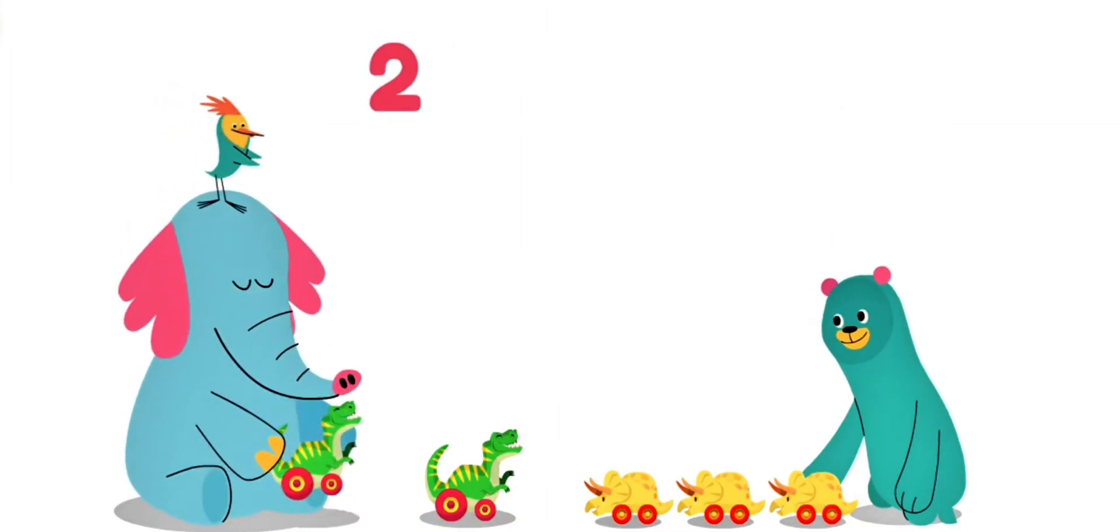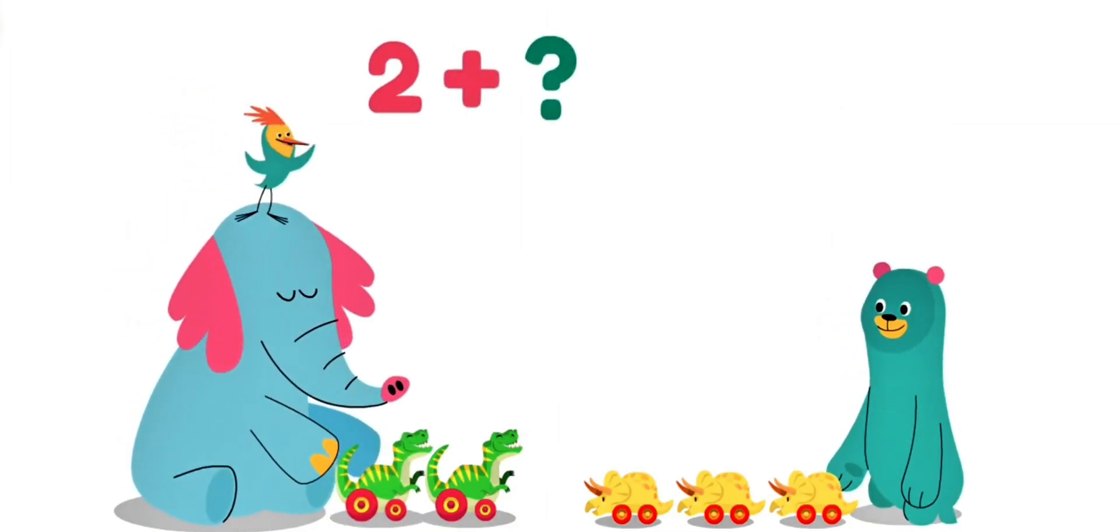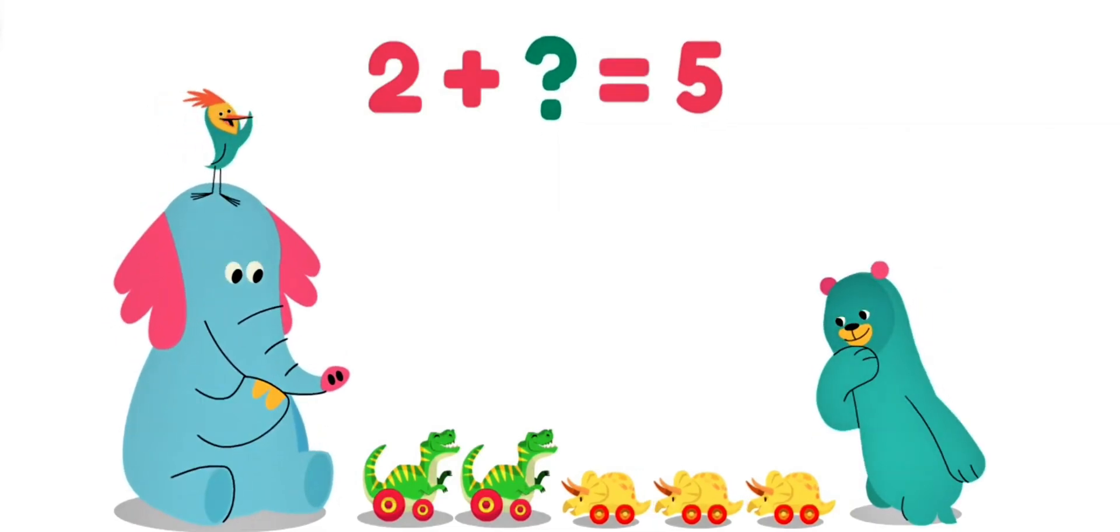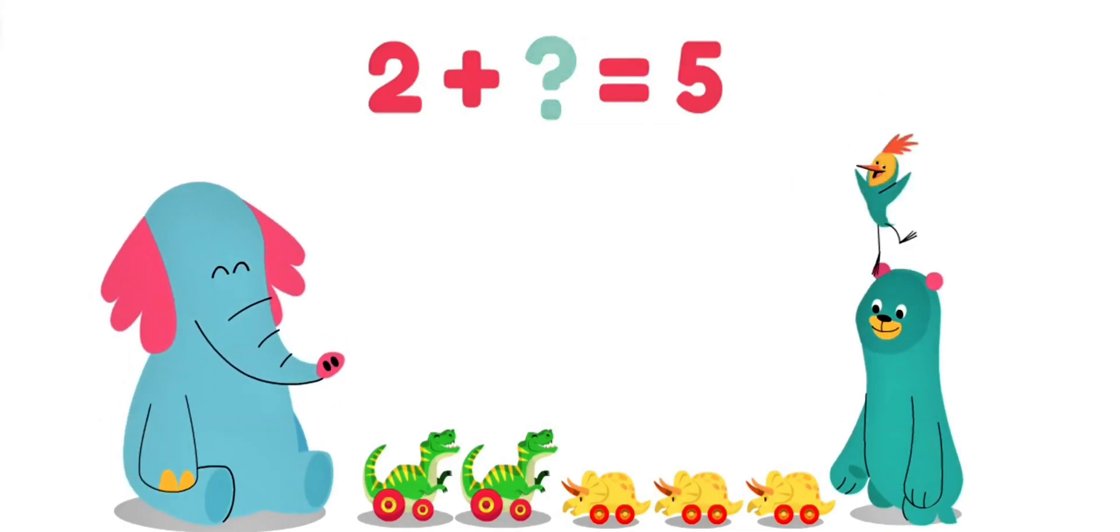Ollo has two dinosaurs! He puts his toys with Cody's toys, and together they have five toy dinosaurs! So, how many dinosaurs does Cody have? If we add two and three, we get five! So, Cody has three toy dinosaurs!